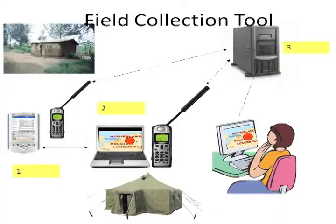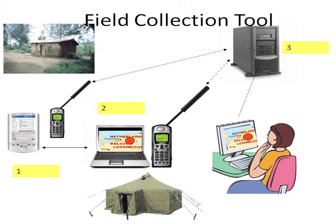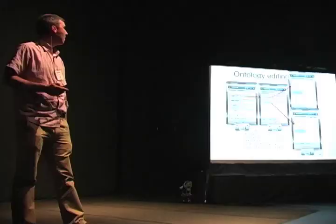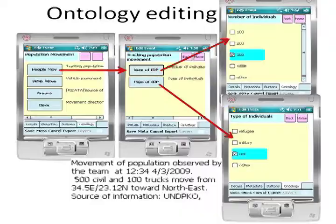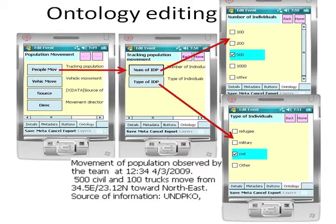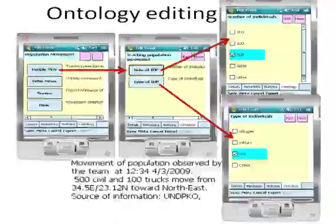I want to talk very quickly as a sidebar about an application that we built for the UN, a field collection tool, where agents on the ground can supply information very quickly to a central server. We have the ability to edit an ontology and set it up so that this information can be automatically selected on a palm-top application.